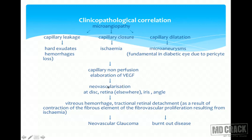The location of neovascularization depends on the site of ischemia — it can be at the disc, retina, iris, or angle, depending on the extent of ischemia and disease etiology. These abnormal, extremely leaky blood vessels can lead to vitreous hemorrhage. The fibrous component can contract, causing tractional retinal detachment; fibrovascular proliferation can cause tractional changes. If it involutes, it leads to burnout disease; if not, neovascular glaucoma can result. Capillary leakage also leads to hard exudates and hemorrhages. Importantly, microaneurysms are specific only to diabetes.